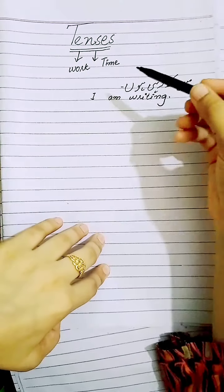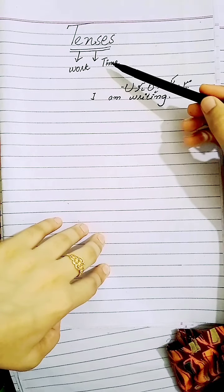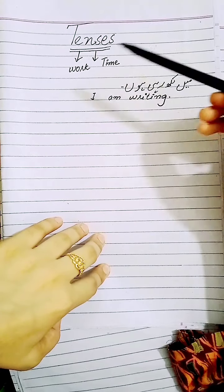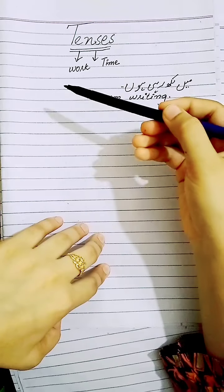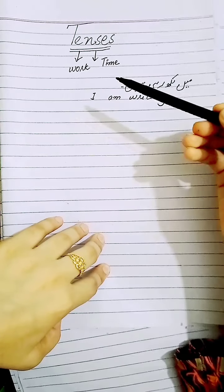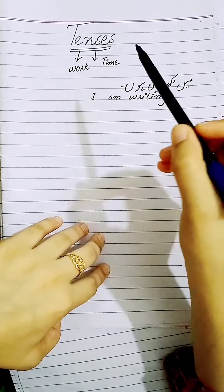So tenses are the rules of grammar which tell us about the time and the work. And about the work — specifically, how much of the work is done, how much is happening, whether it is ongoing, or whether it has been completed.